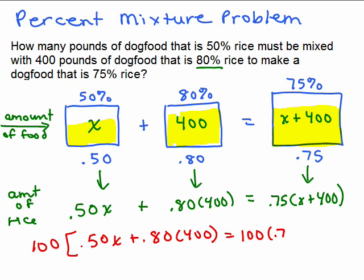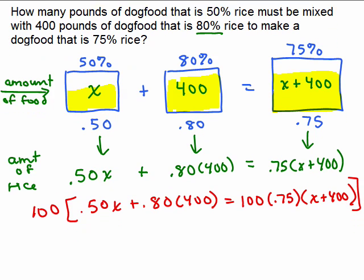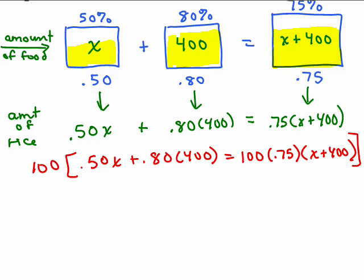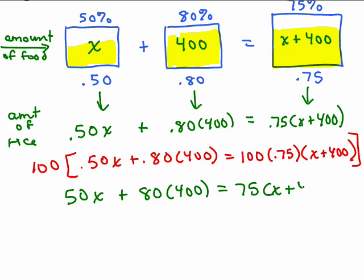When you're multiplying 100 times 0.75, that'll take care of the decimal, but X plus 400 does not also get multiplied separately. So what we have is: 100 times 0.50 will just be 50X, this will be 80 times 400, and that'll be 75 times (X plus 400). When you write the original equation you do need the decimal points — the only reason I can write it this way is because it's an equation and I multiply both sides by 100.